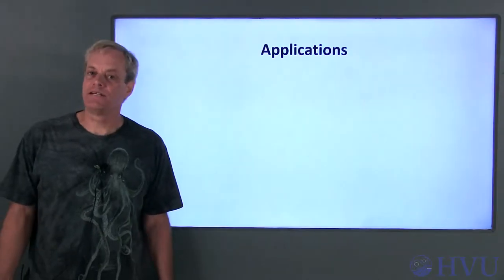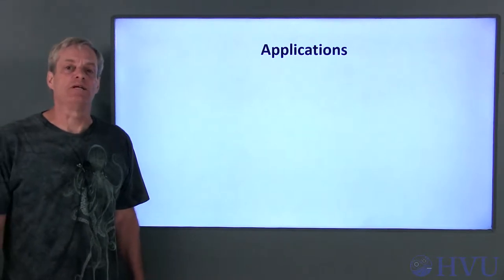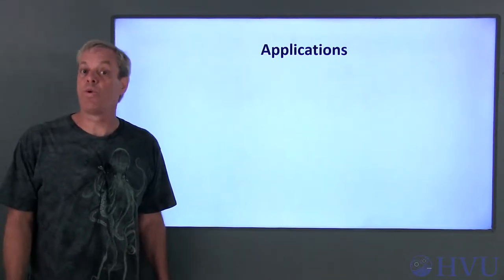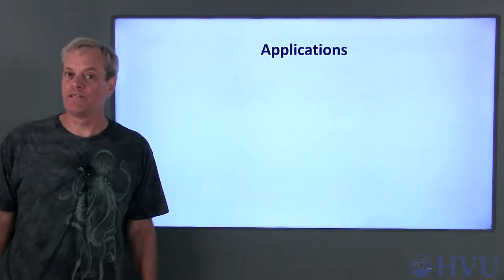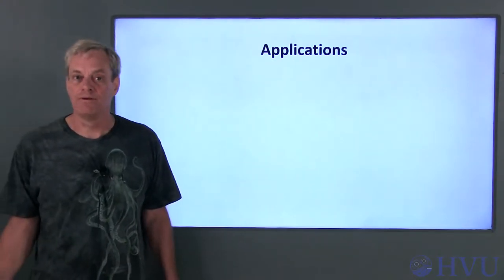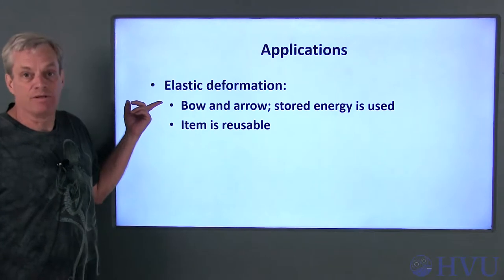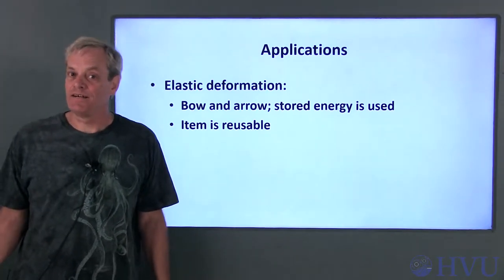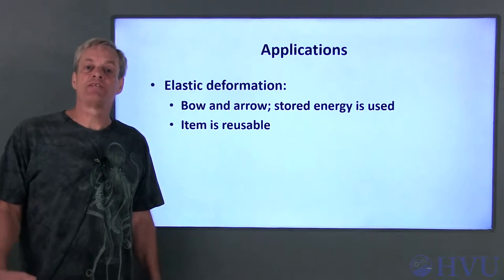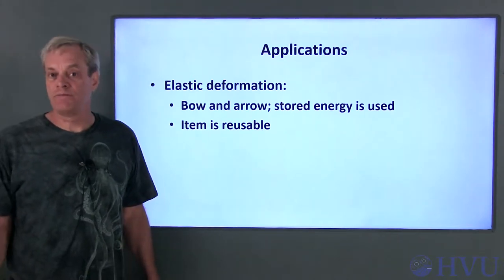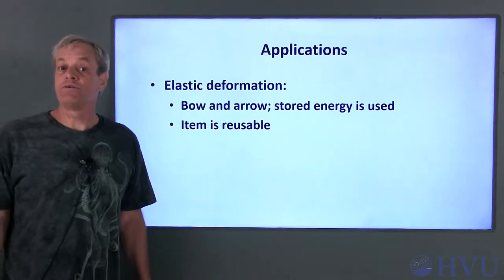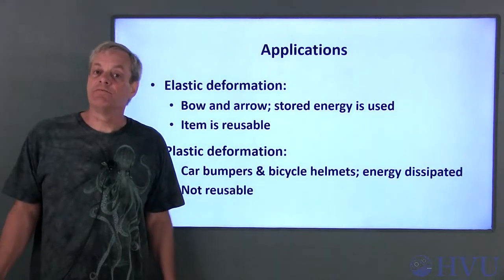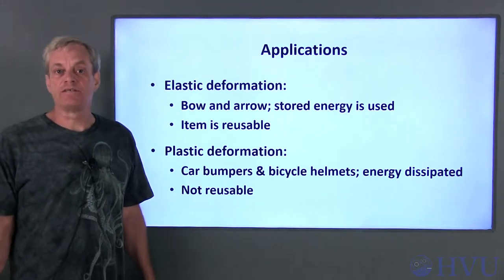Elastic and plastic deformation both have their uses. In general, elastic deformation is desirable if the material is to be reused or if you need to recover the energy stored during deflection. A bow and arrow is an example of this. When you bend the bow, you're storing energy in an elastic deformation. That energy is transferred to the arrow when you release the bow string. The bow then returns to its original shape and you can reuse the bow to fire another arrow.